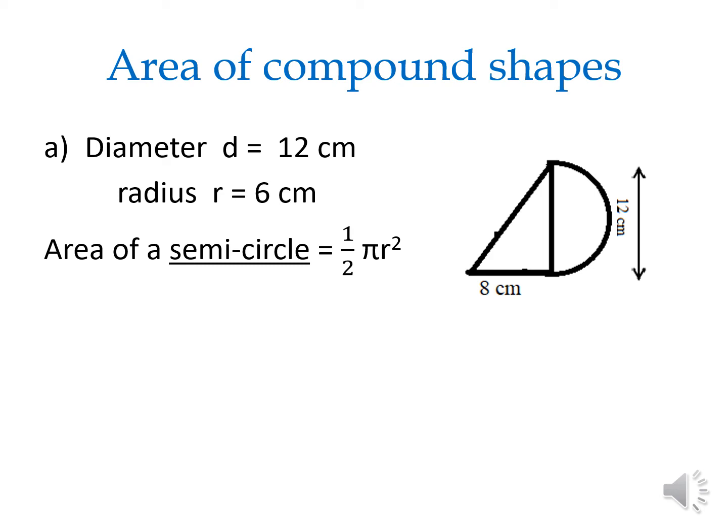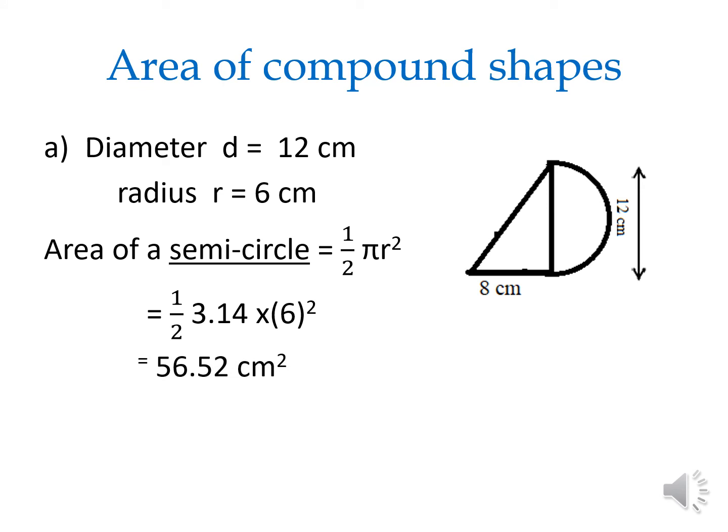So, 1 over 2 multiply pi r square. What is r here? 6 centimeters. Apply everything in the formula: 1 over 2 multiply 3.14 multiply 6 squared. The area of the semicircle is 56.52 centimeter square.